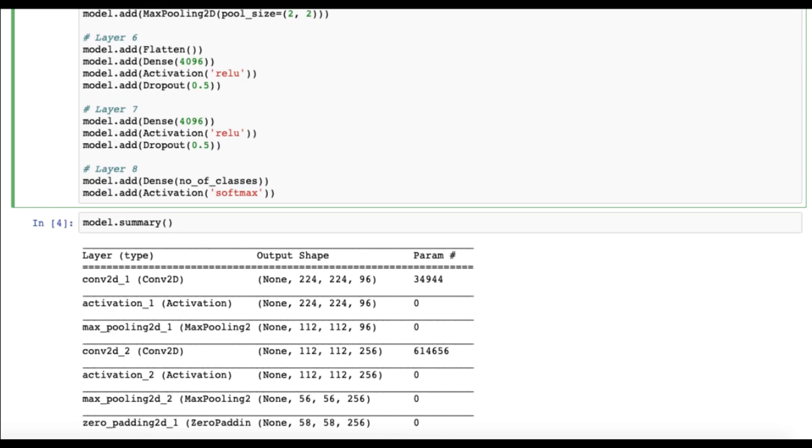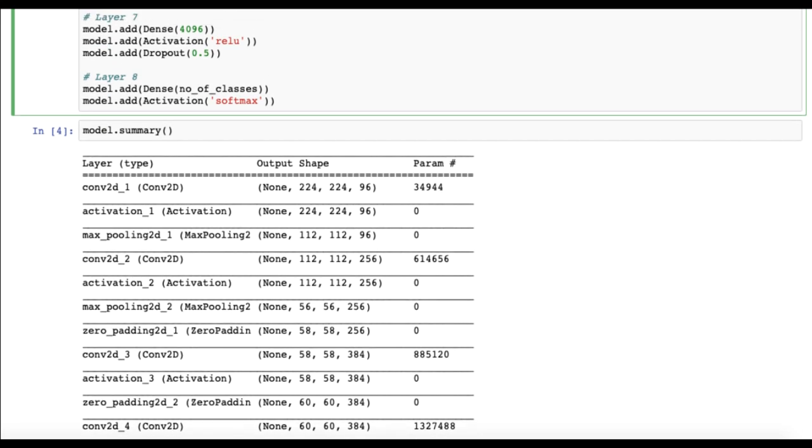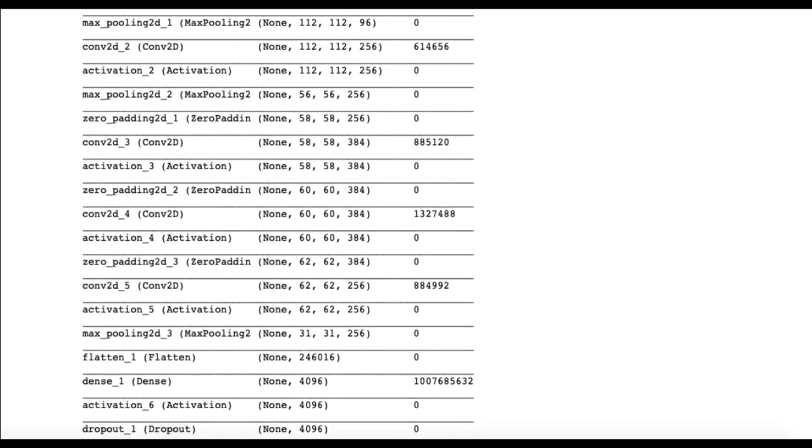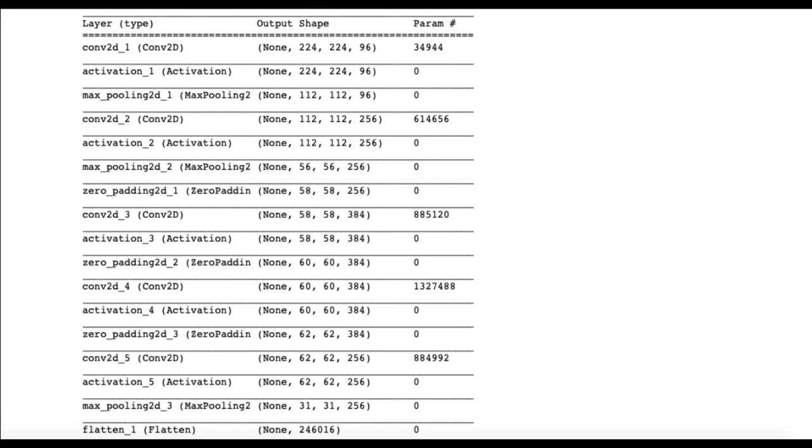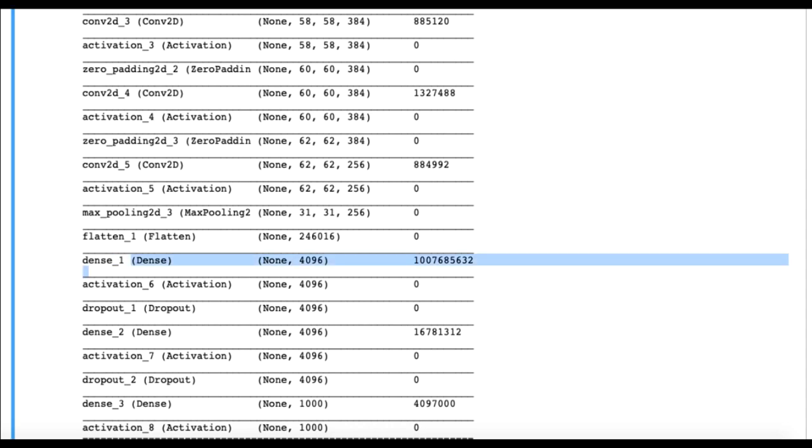You can see the model parameters with the summary option in Keras. You can see the first convolutional layer, activation, pooling, and then we have our fully connected layers. First we're flattening it out, so you can see the shape also here. It's around 31 by 31 into 256 or into the number of filters. Once before passing this to the fully connected layer we need to flatten this out, so you can see the change in the shape here. This makes it compatible for matrix multiplication with the fully connected layer.